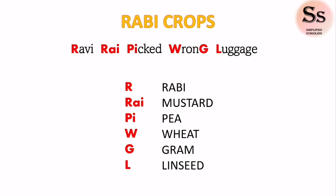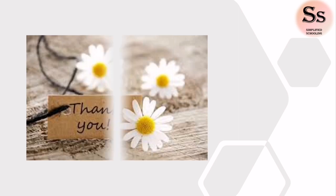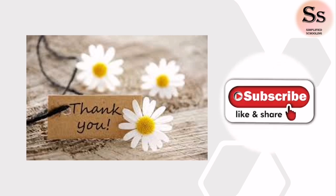So in order to memorize rabi crops, just remember the sentence 'Ravi rai picked wrong luggage', and for kharif crops just remember Madhya Pradesh and Chhattisgarh, that is MP and CG. Hope you find this method of memorizing examples to be easy. If you want more such content, please subscribe to the channel Simplified Schooling.